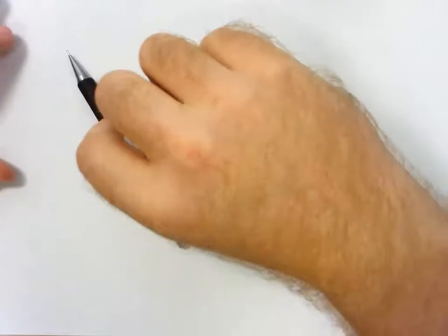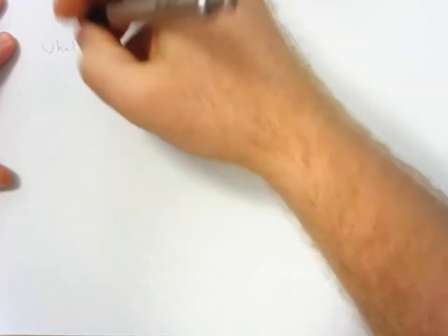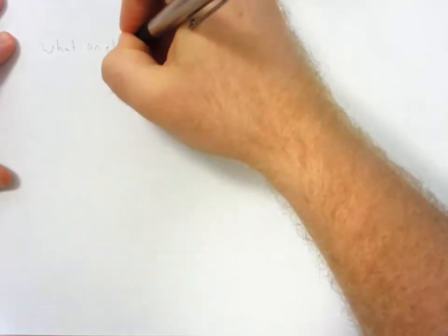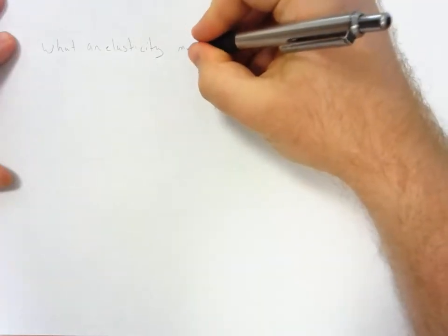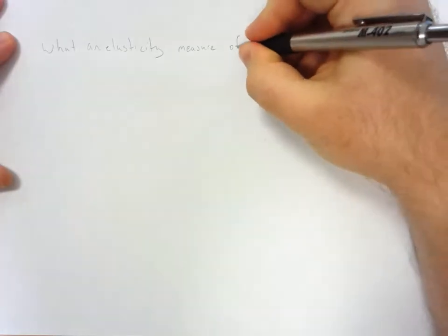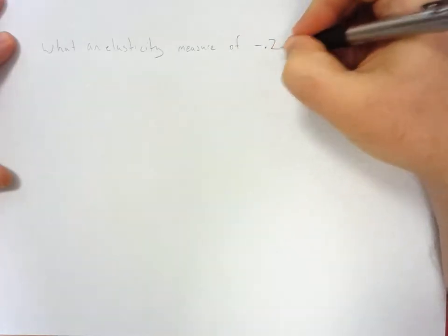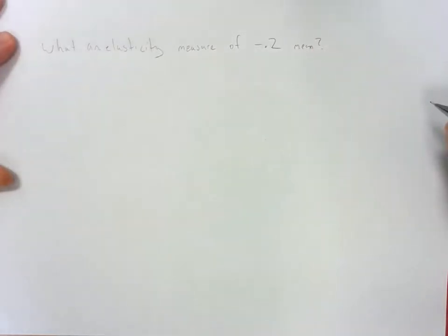This video is going to go over what an elasticity measure of negative 0.2 means. The structure of the video is basically going to go over the assumptions that need to be discussed to figure out what this elasticity measure of negative 0.2 means, what the different significant values are, and how you can use that to answer your questions in your econ classes.